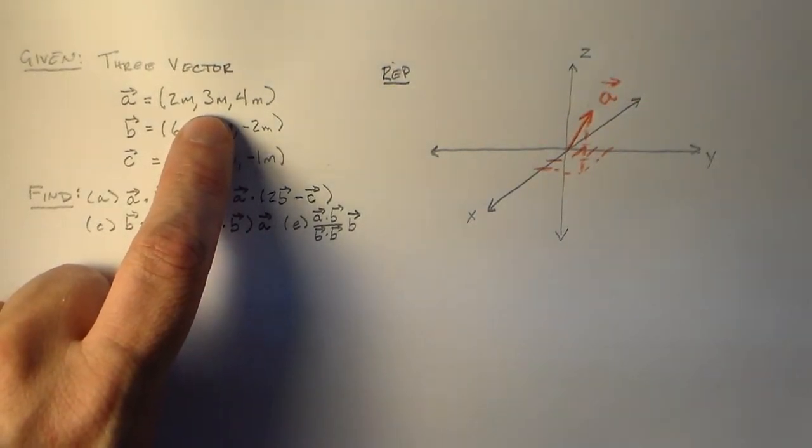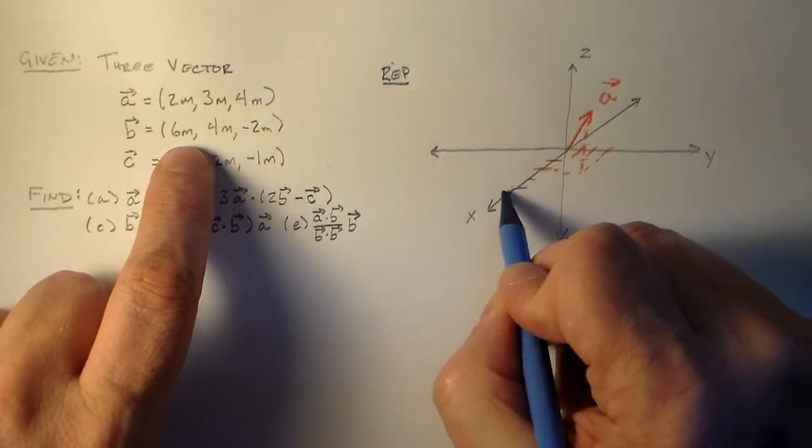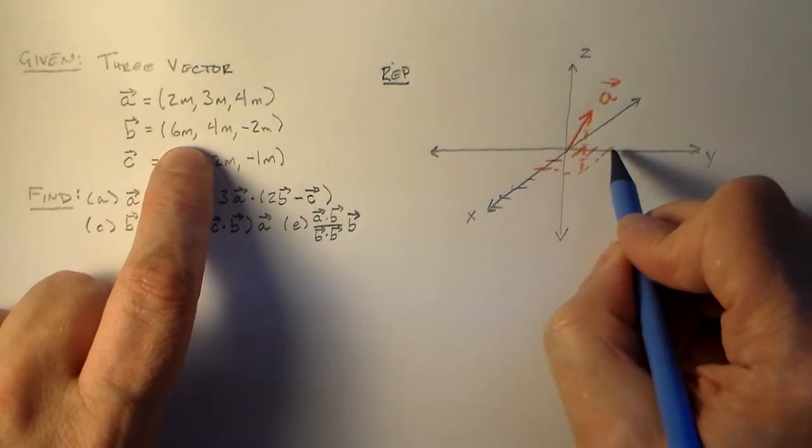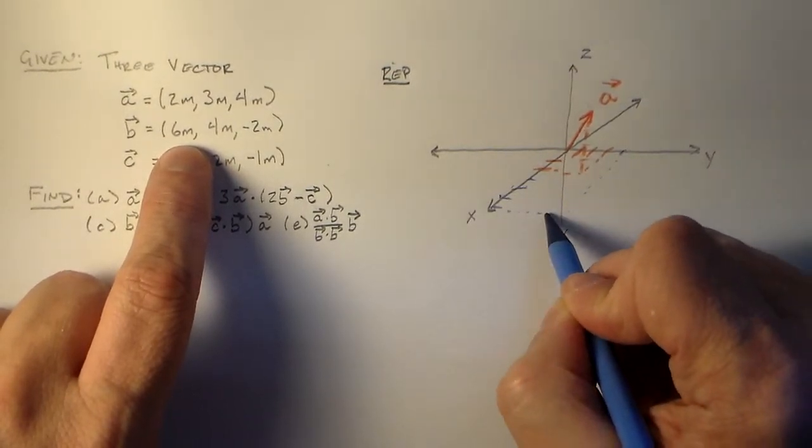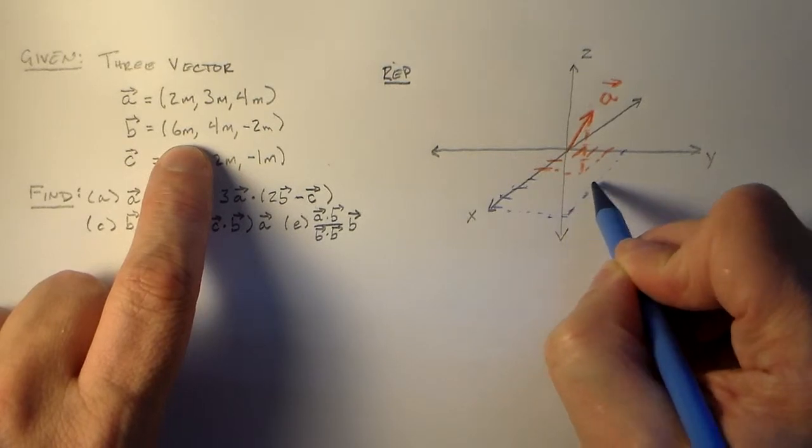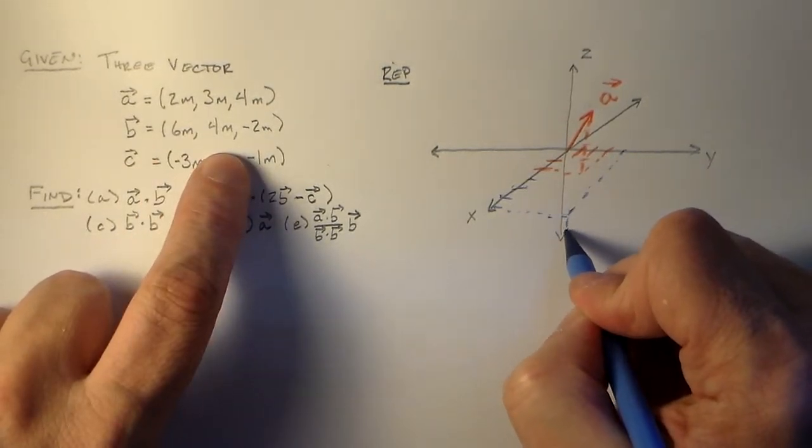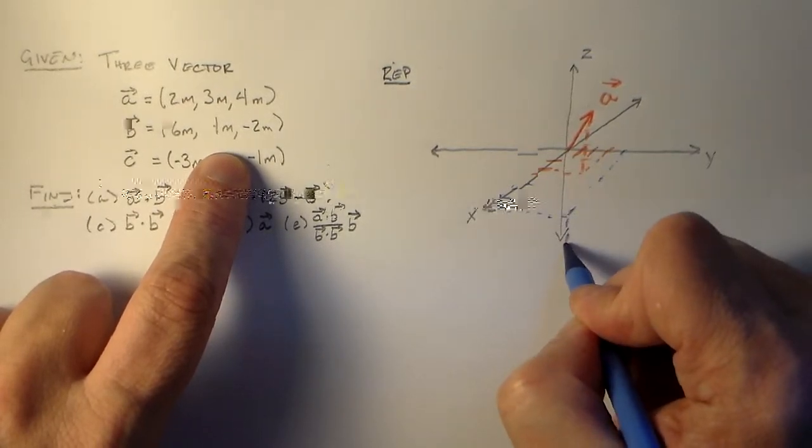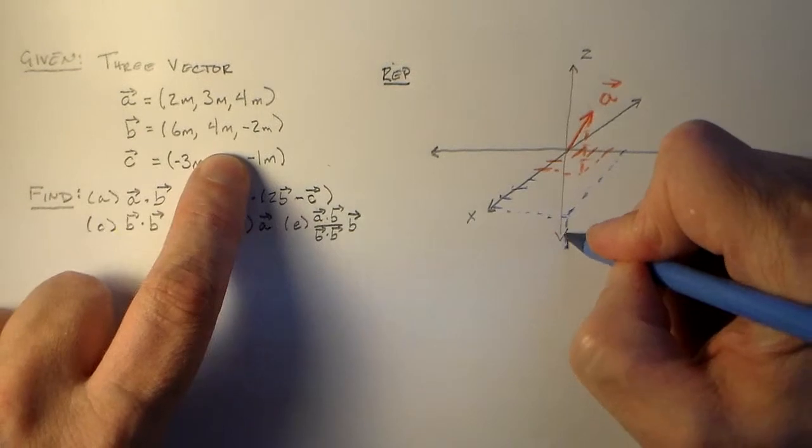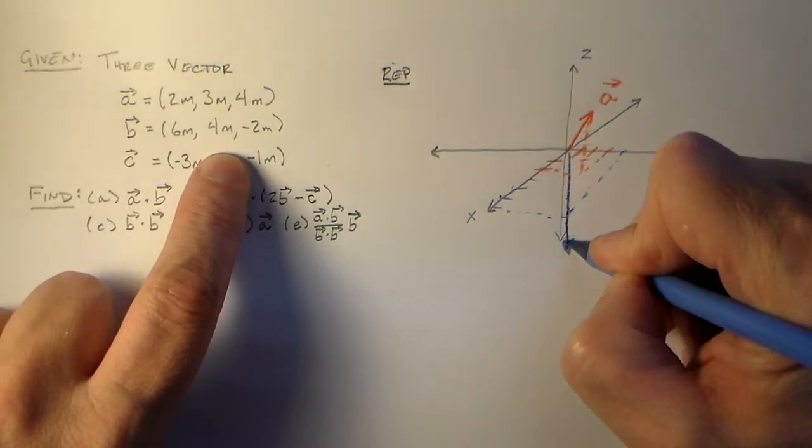And then if we have b, b is at six, so one, two, three, four, five, six way over here, and four way over there, so we go that way and that way, and we get here, and then we go down to one, two, so that's our spot there, and so that's b.